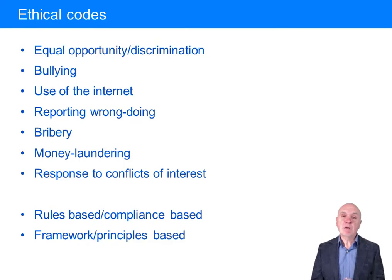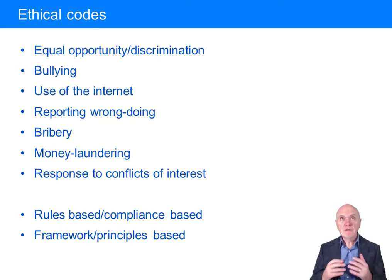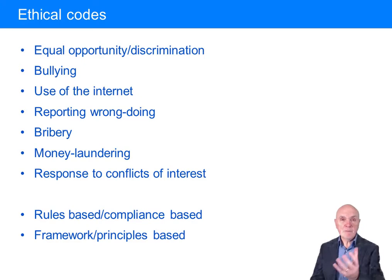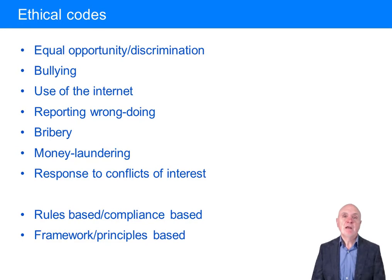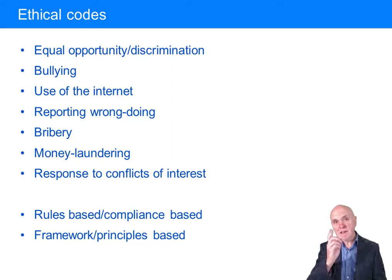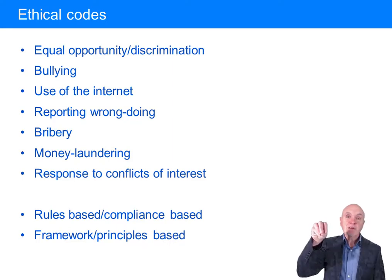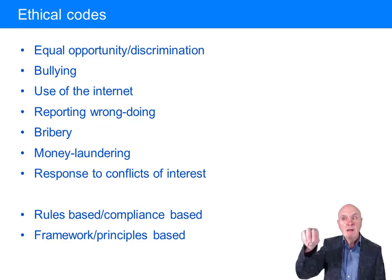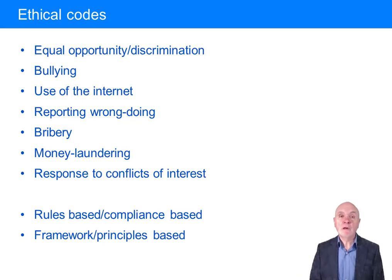There should be some guidance on reporting wrongdoing — there should be someone you're told to go to if you think something is wrong, if you think somebody is bullying somebody else. You don't want people seeing something wrong and either sitting on it because they're frightened or not knowing who will deal with it. Sometimes reporting to your manager isn't going to work — the manager might be the source of the bullying — so there has to be guidance on where else to go in the organisation.